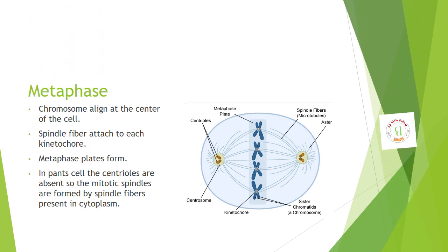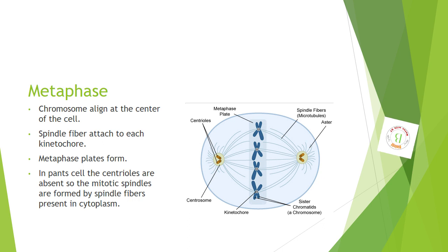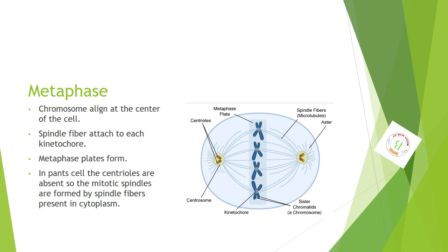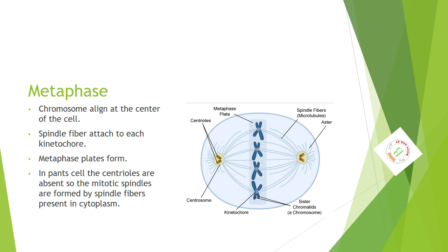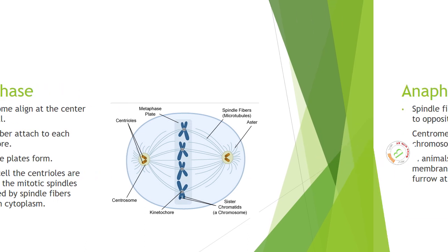Metaphase. Chromosomes align at the center of the cell. Spindle fibers attach to each kinetochore. Metaphase plate forms. In plant cells, centrioles are absent, so the mitotic spindles are formed by spindle fibers present inside the cytoplasm.